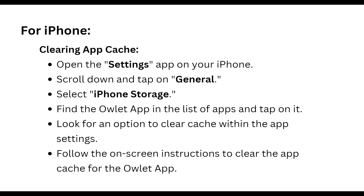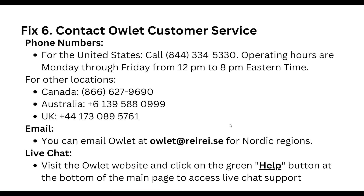For iPhone, open the Settings app, scroll down and tap General, select iPhone Storage, find the Owlet app in the list, tap on it, and look for the option to clear cache within the app settings. Follow the on-screen instructions to clear the app cache.